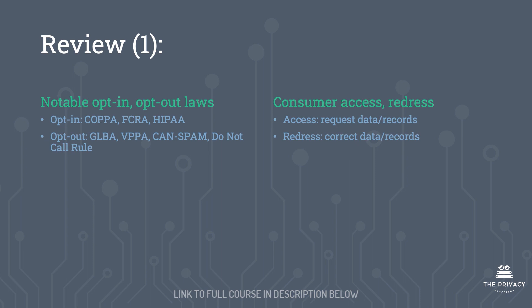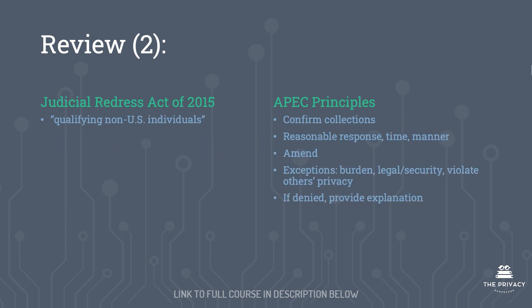If a request for access is denied, it's important that the organization provide a reason for that denial. In this lecture we have concluded the section on managing user preferences. COPPA, the FCRA, and HIPAA have particular opt-in requirements, while GLBA, VPPA, CAN-SPAM, and the Do Not Call Rule have particular opt-out requirements. For the Judicial Redress Act of 2015, you need to know the definition of qualifying non-US individuals. We concluded with a discussion about the APEC principles that concern opt-in, opt-out, and other user preferences.